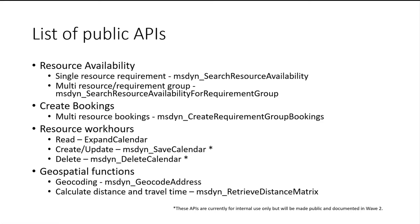We also have a couple of other APIs focused around geospatial functionalities, like geocoding of an address. If you have a real address, you could geocode it into coordinates using the MS-Dyn Geocode Address API. We also have Retrieve Distance Matrix, which calculates the distance and travel time for a resource from point A to point B — for example, from a technician's location to the job location. This API is specifically useful when you want to use any provider other than Bing Maps, such as Google or ESRI, with support for custom map providers.